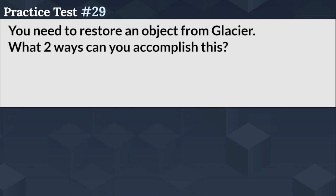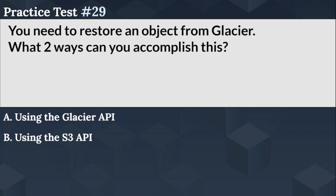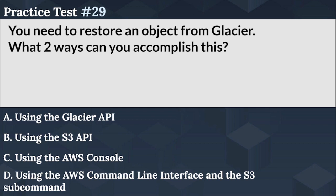You need to restore an object from Glacier. What two ways can you accomplish this? Option A: using the Glacier API. Option B: using the S3 API. Option C: using the AWS console. Option D: using the AWS command line interface and the S3 subcommand.